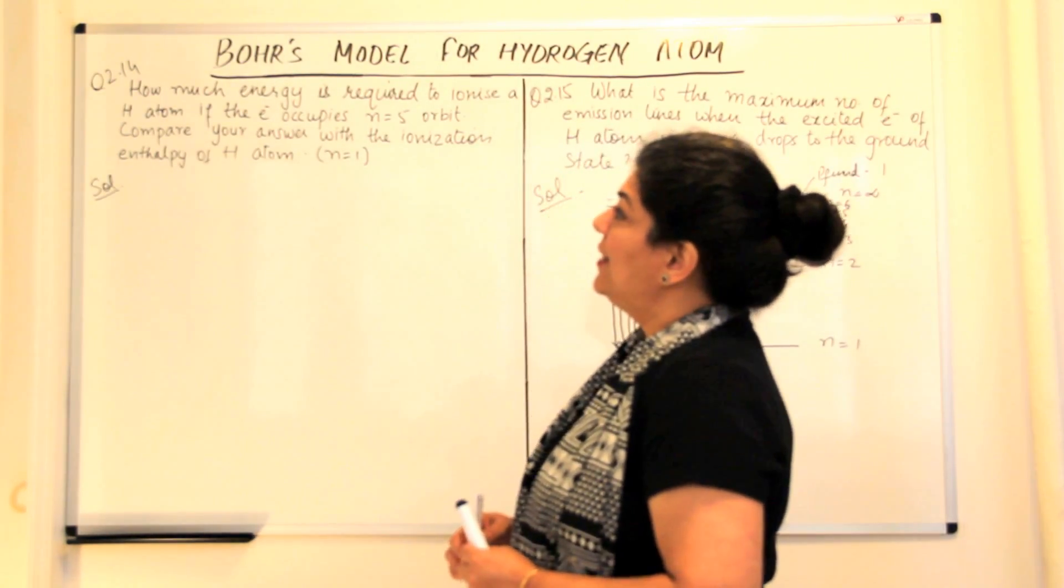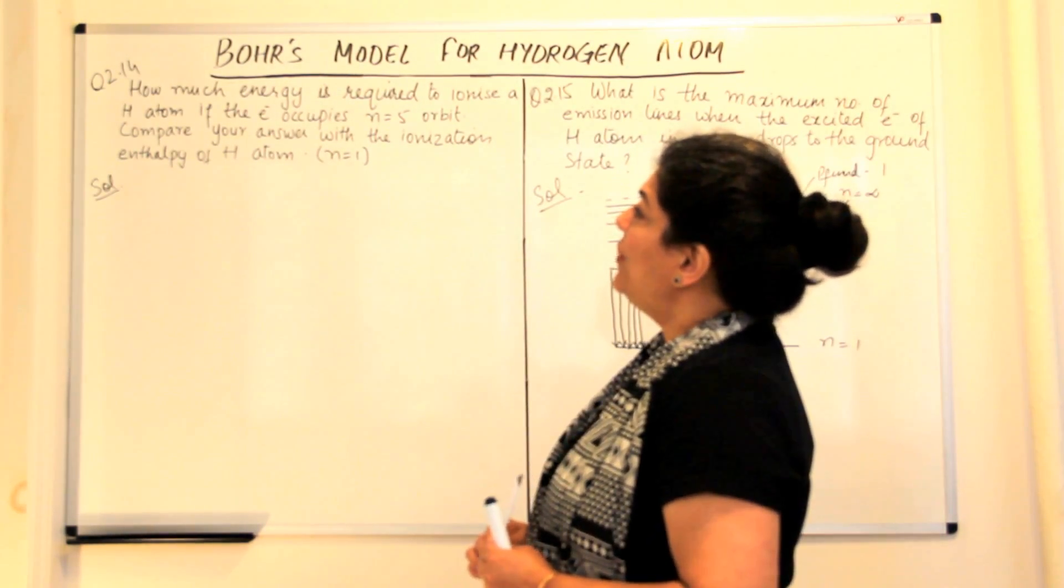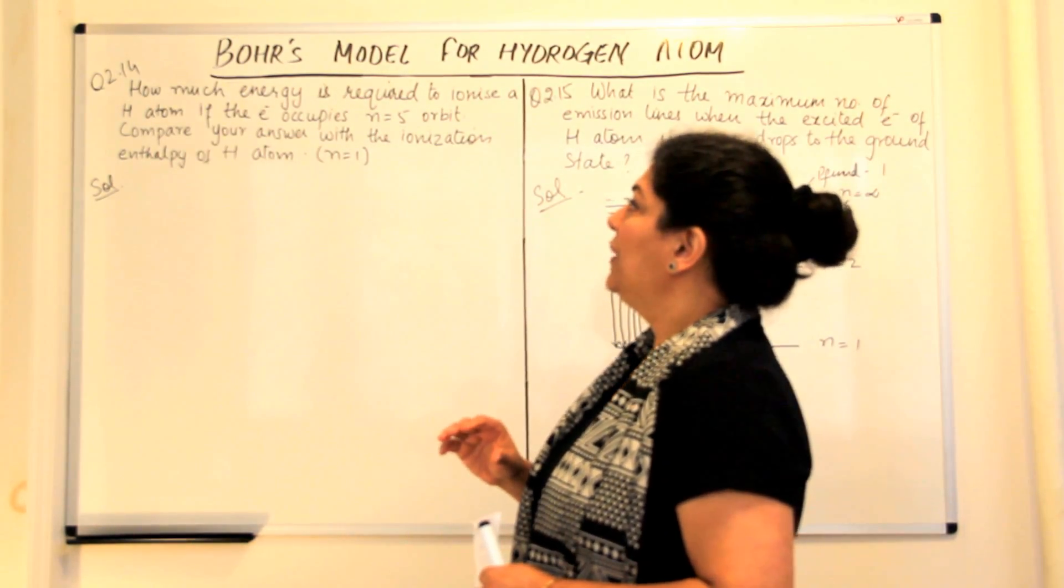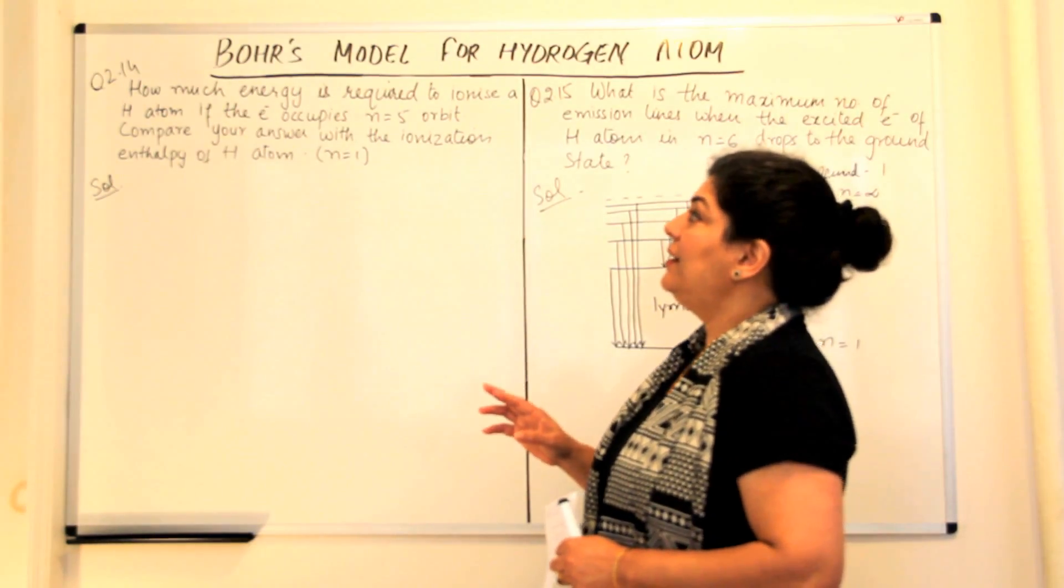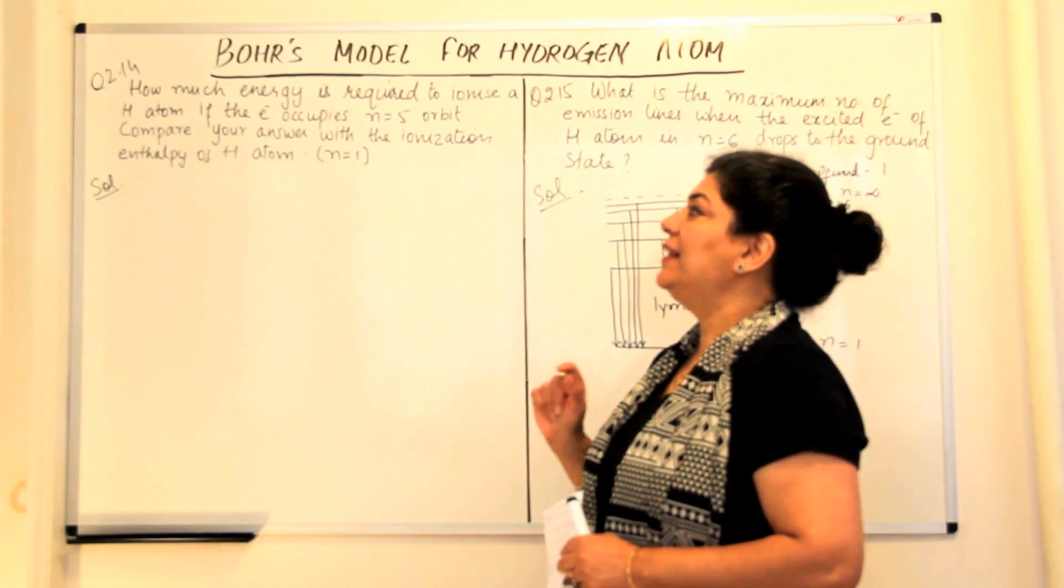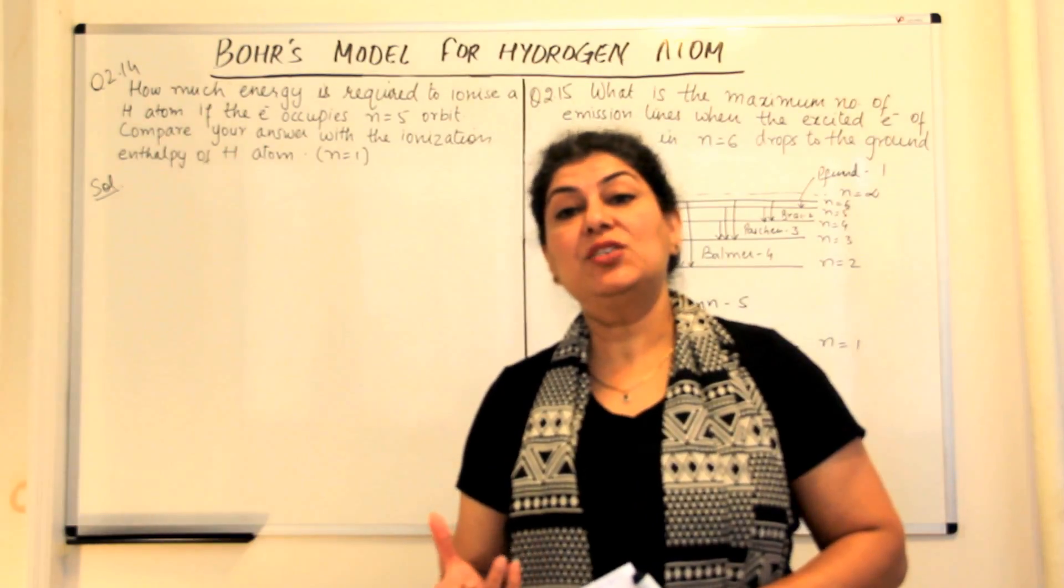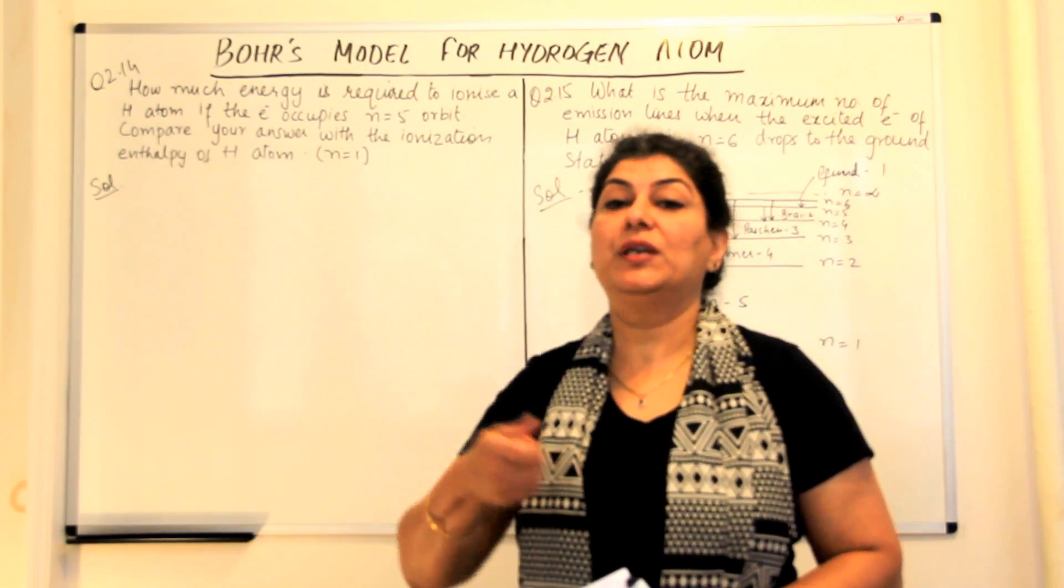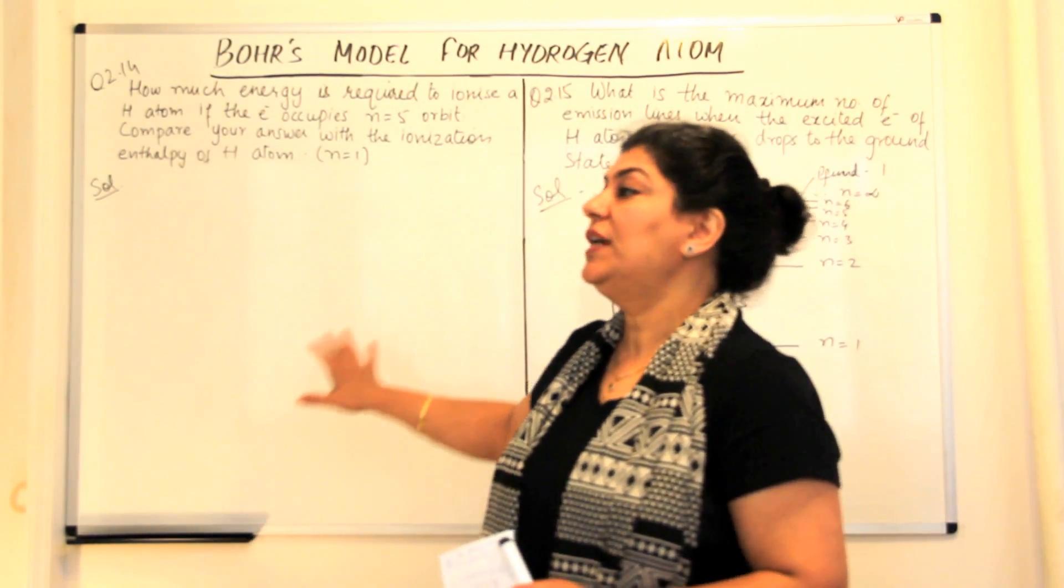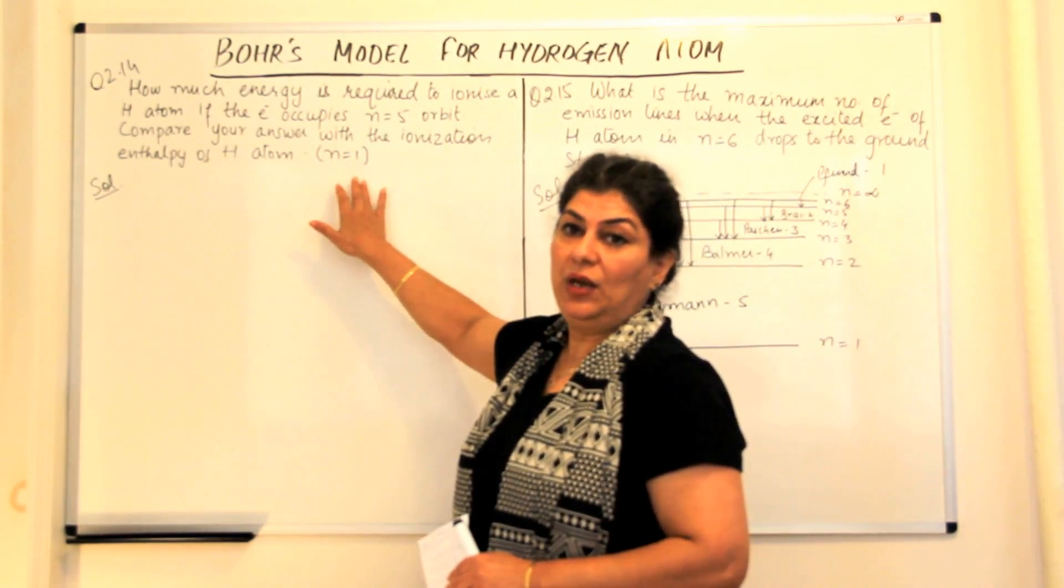The first is question 14 of the second chapter for class 11. The question is: how much energy is required to ionize a hydrogen atom if the electron occupies n equals 5 orbit? Compare your answer with the ionization enthalpy of hydrogen atom. Ionization enthalpy of hydrogen atom is when the electron is removed from the ground state, and in the ground state the electron is present in the first shell. Therefore in that case the value of n would be 1.